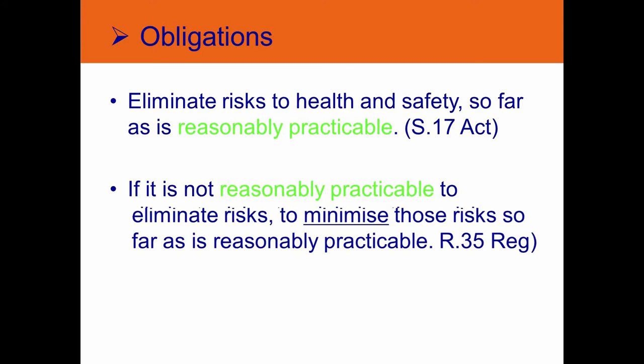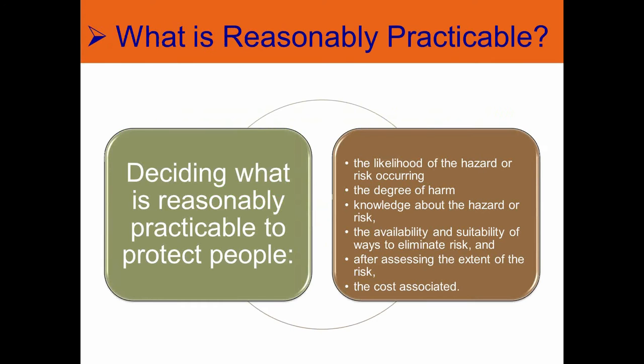To simplify these concepts: on the left, you've got deciding what is reasonably practicable to do. You've got to consider the likelihood of the hazard or risk occurring, the degree of harm, the knowledge about the hazard or risk, the availability and suitability of ways to eliminate it. And then, and only then, after assessing the extent of the risk, you can consider costs.